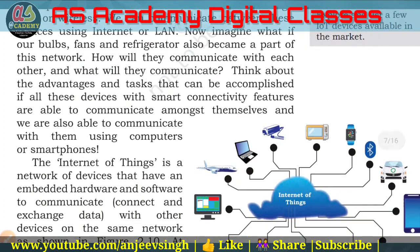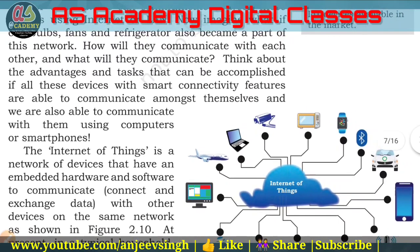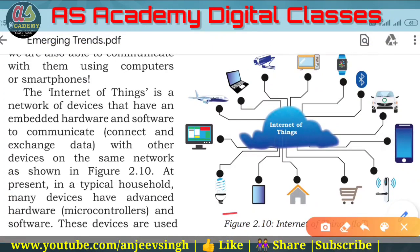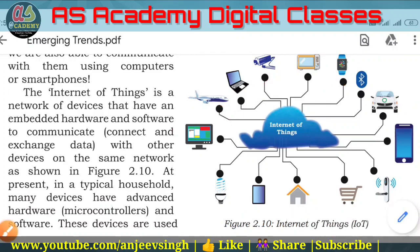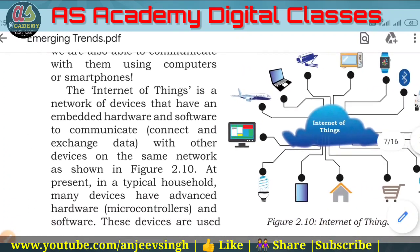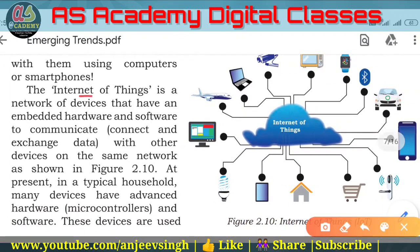We are able to communicate with them using computers or smartphones. This means that whatever devices you see — bulbs, LEDs, doors, cars, wristwatches, TVs, cameras, laptops, aeroplanes — we can control them all. The Internet of Things is the network of devices that have embedded hardware and software to communicate, connect and exchange data with other devices on the same network.